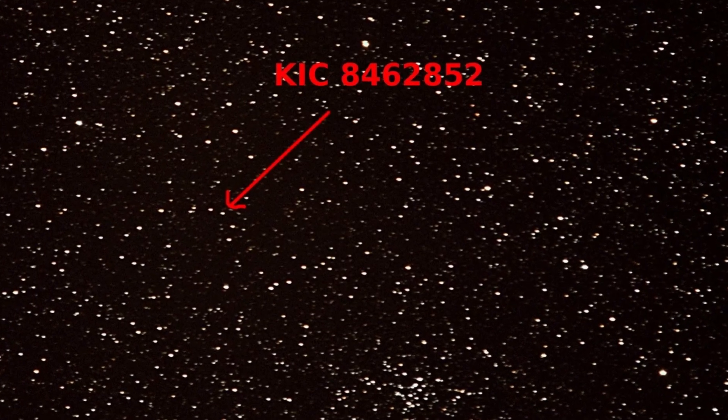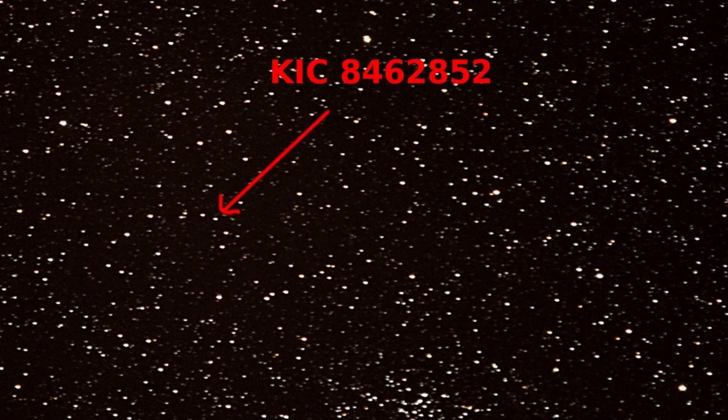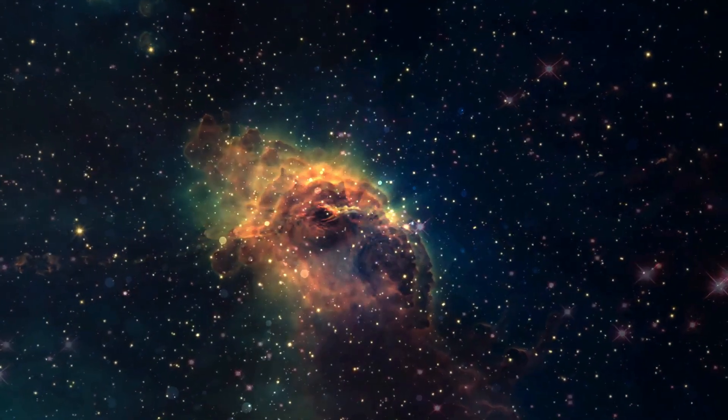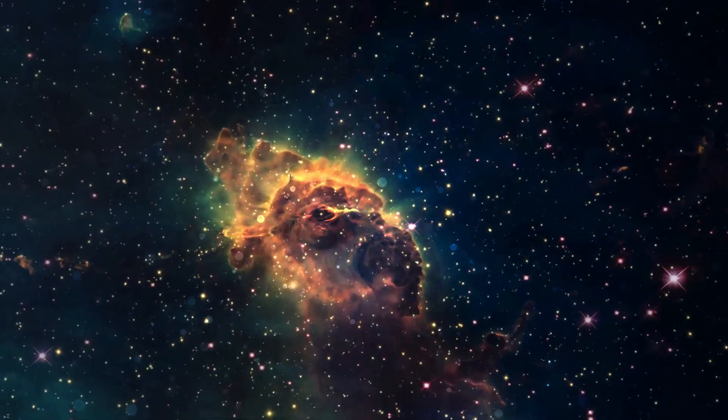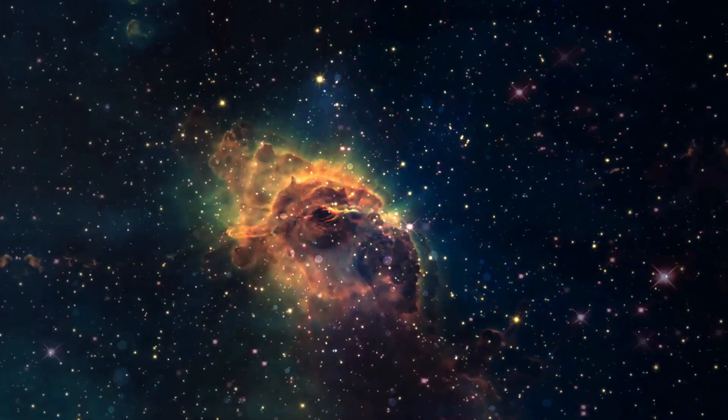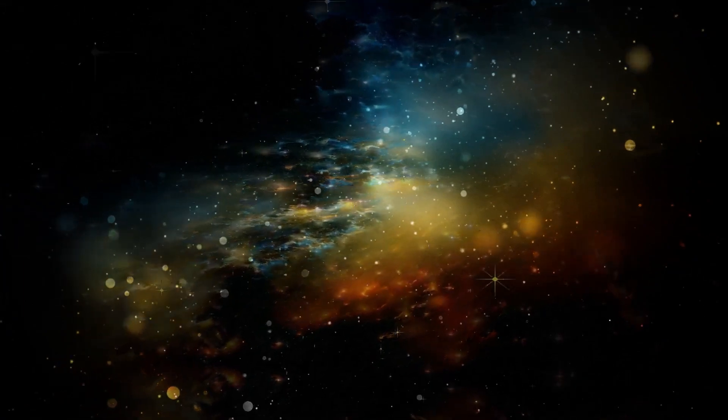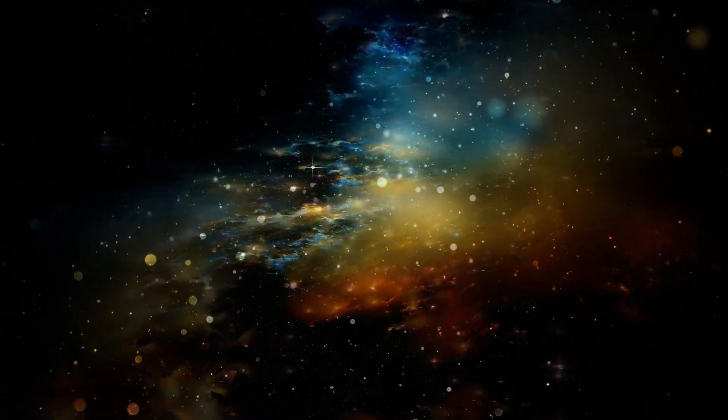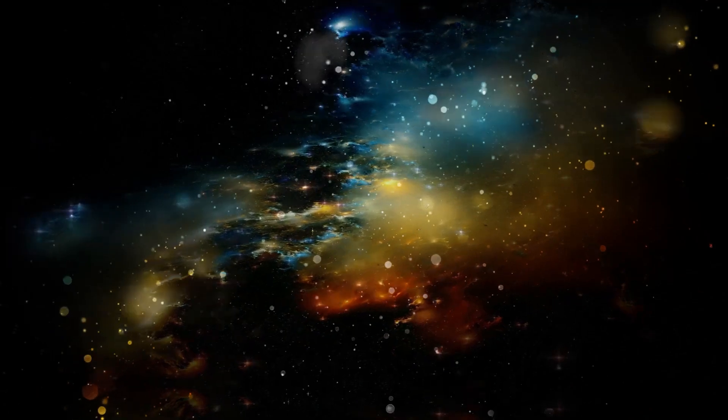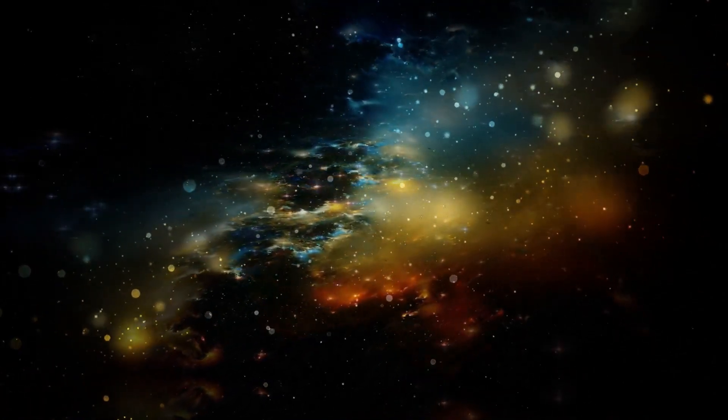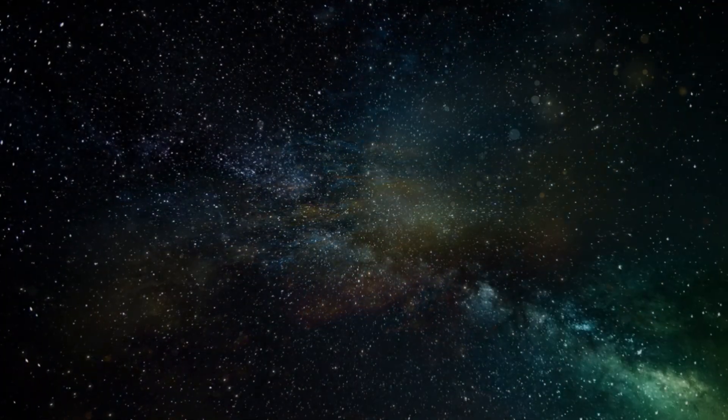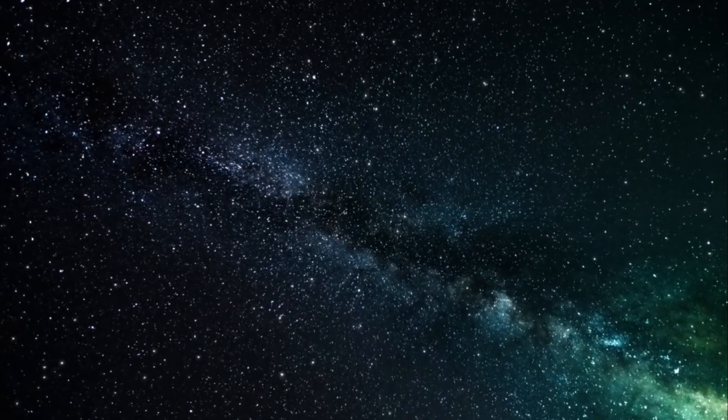KIC 8462852, also known as Tabby's Star, has puzzled scientists with its mysterious dimming that defies explanation. Speculation about the activities of an alien civilization arose, although it has since decreased. The source of the dimming appears consistent with submicron dust, but does not follow a periodic orbit. Infrared observations indicated that the material causing the dimming must be cold, leading to hypotheses about cold comets breaking up. JWST has already observed Tabby's star at a higher resolution than previous measurements, and the findings are yet to be released. It remains to be seen if these observations will settle the mystery, or deepen it further.